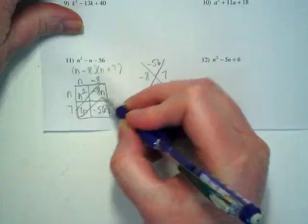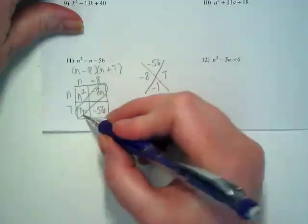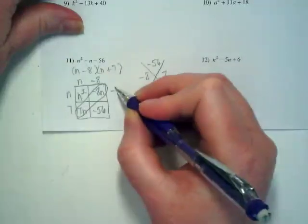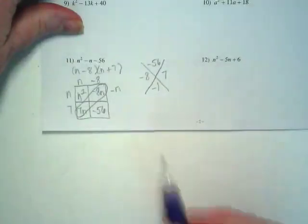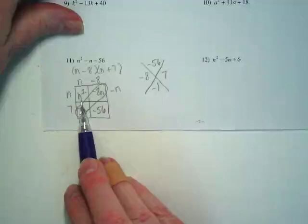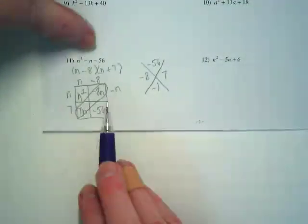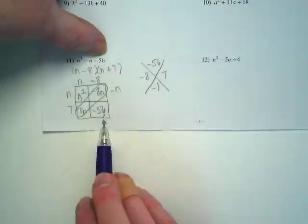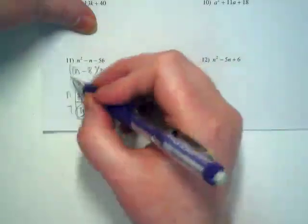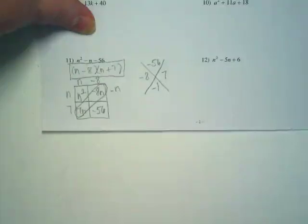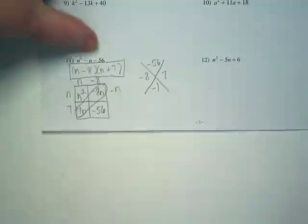Want to look at combining like terms before we can check all the way? 7n, negative 8n gives us negative n or negative 1n. Here's my first term. Is that matching in my polynomial? Negative n here, negative 56 here. So this is our solution. That is our two factors that multiply to get n squared minus n minus 56.